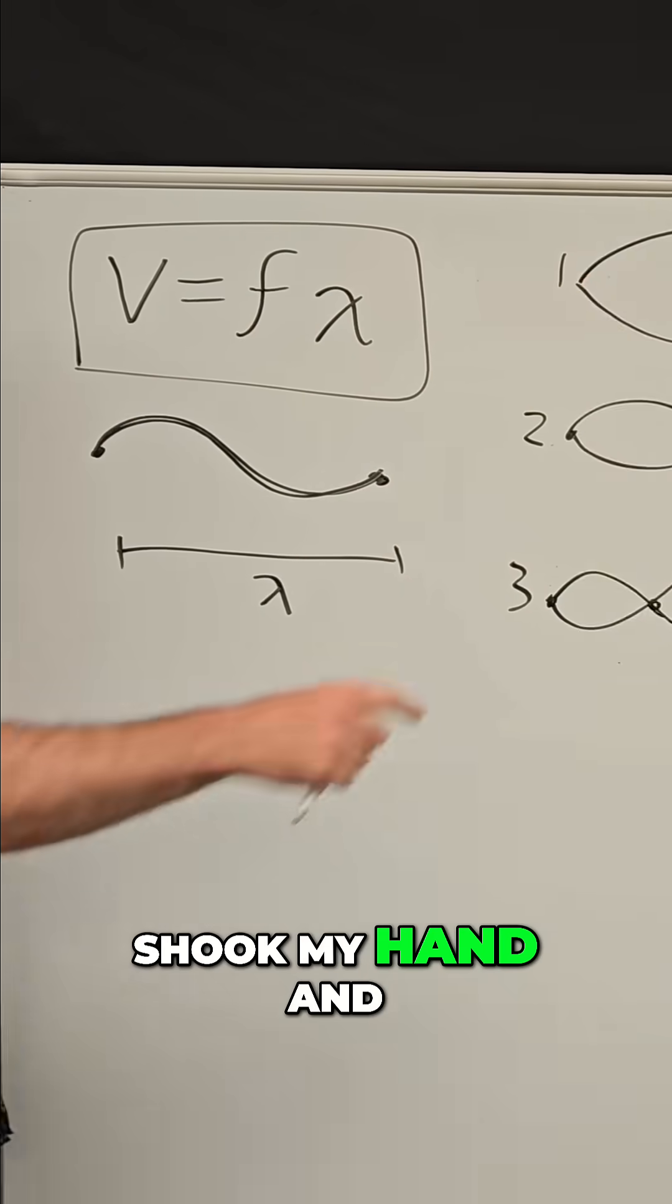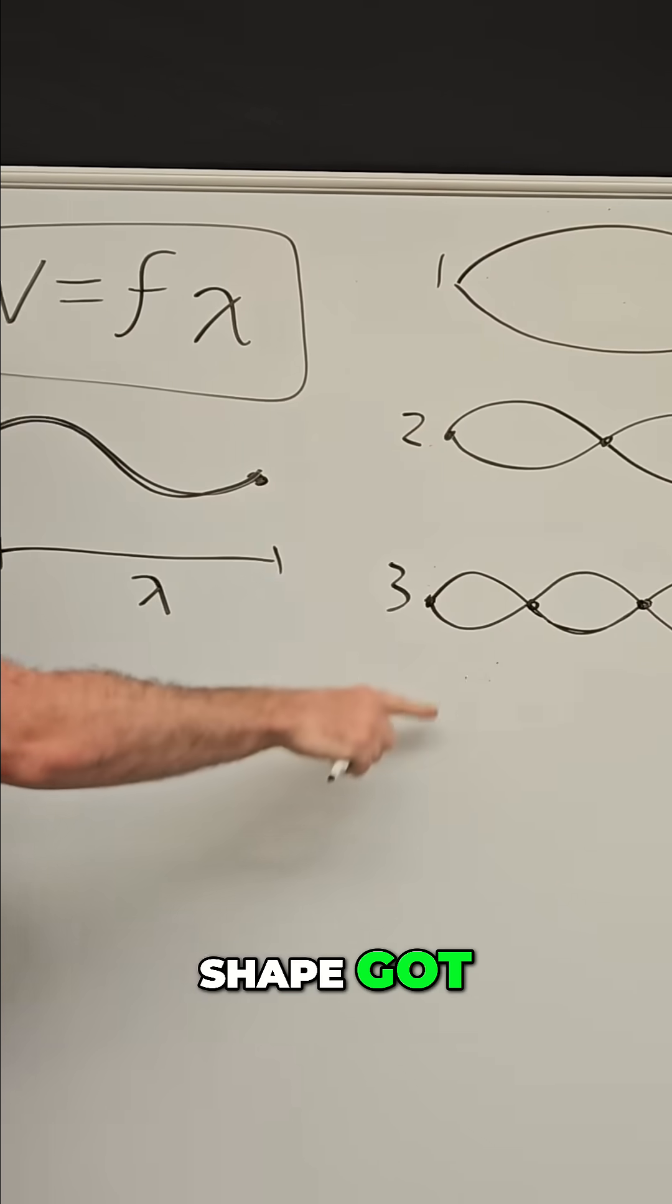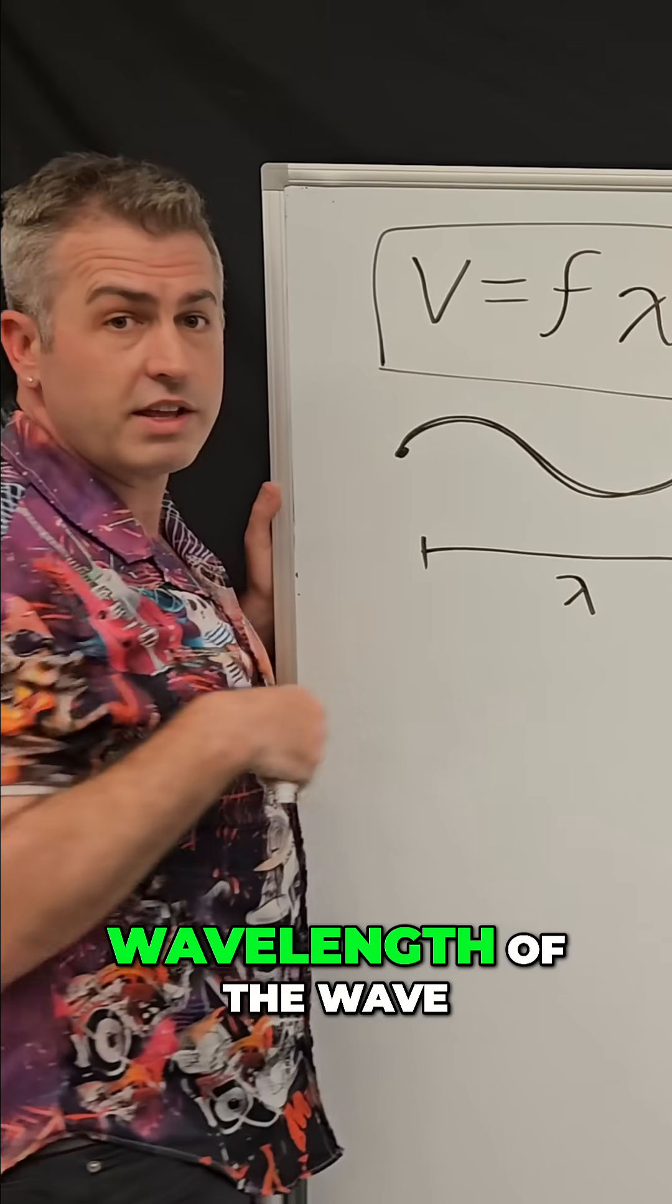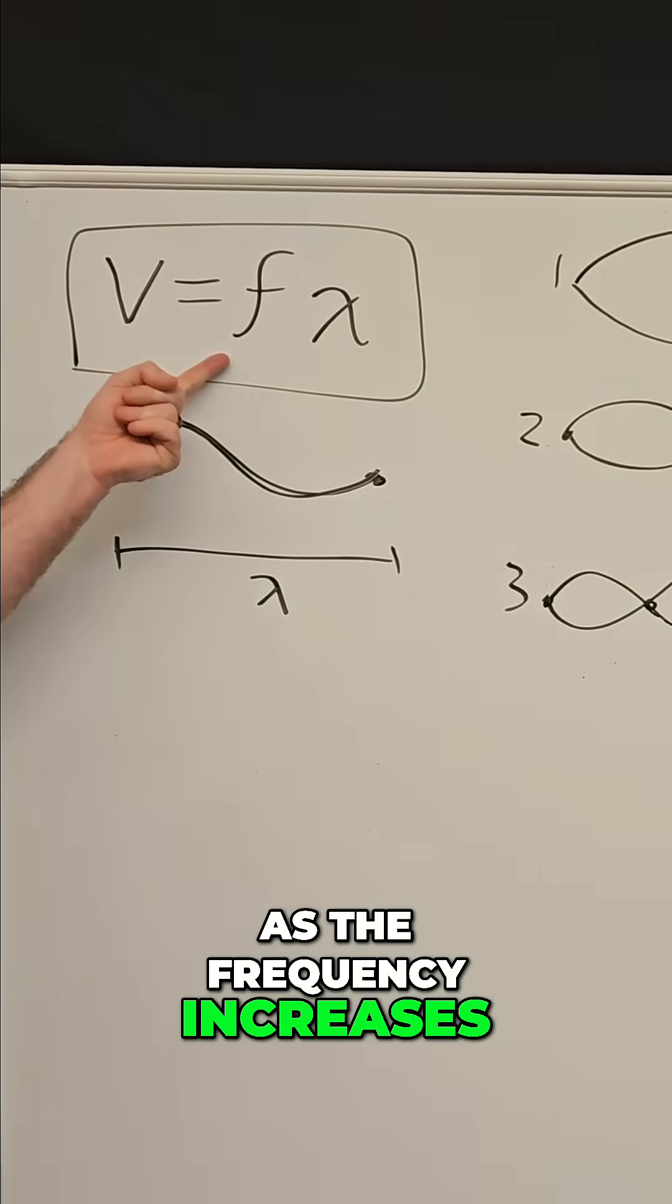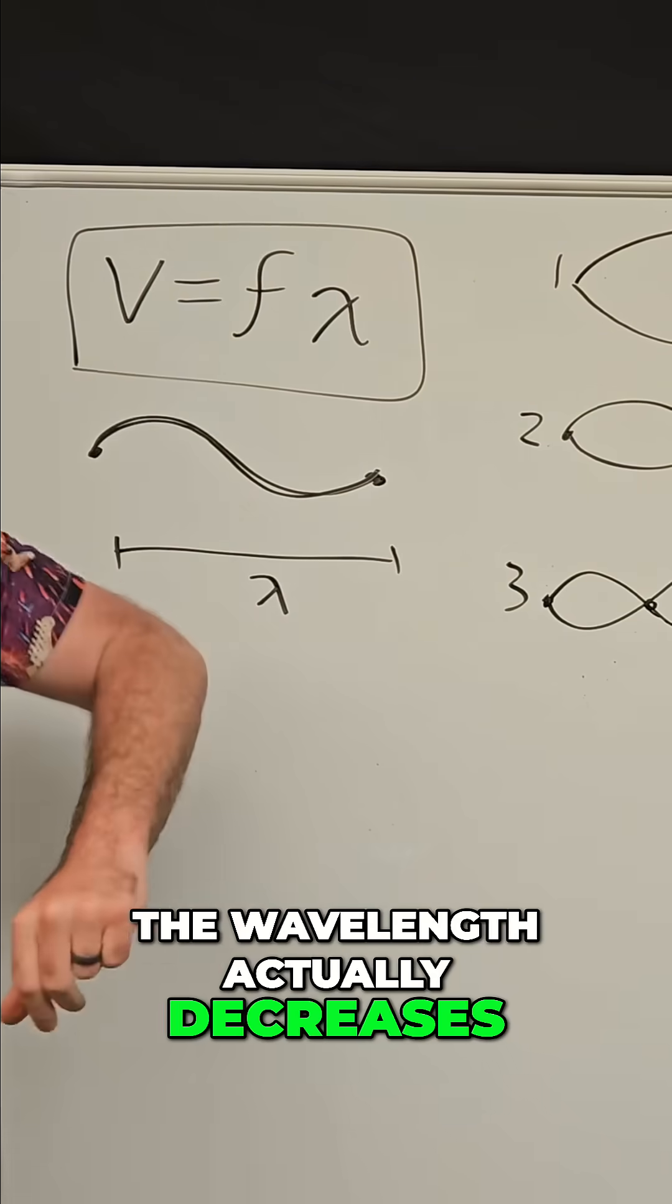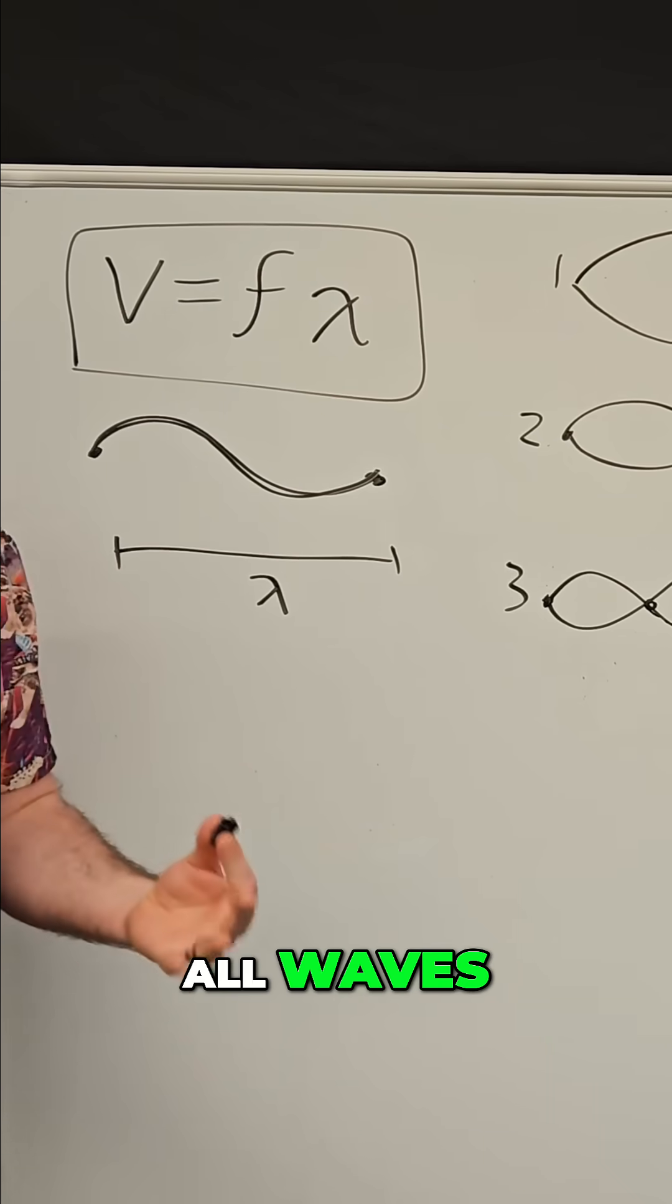The faster I shook my hand and the higher this mode shape got, what happened to the wavelength of the wave? As the frequency increases, the wavelength actually decreases. And that's true for all waves.